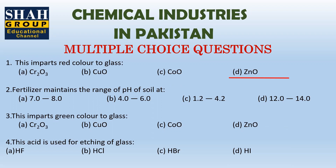Fertilizers maintain the pH of soil at near about neutral, that means seven to eight. The next question: which substance imparts green color to glass? The answer is chromium oxide.